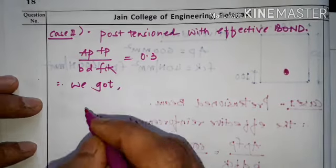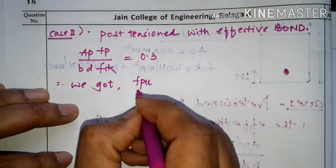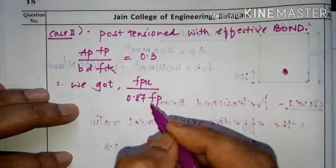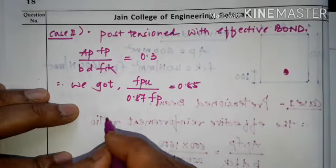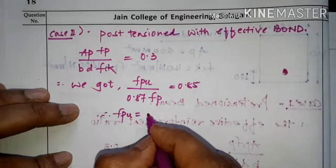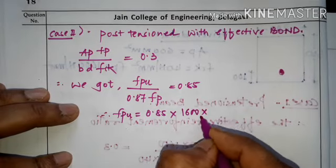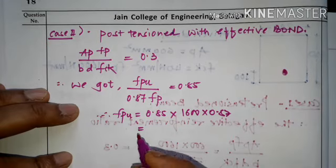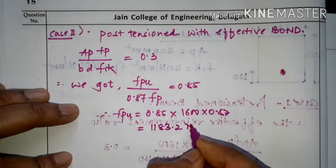Therefore FPU / 0.87FP = 0.85, so FPU = 0.85 × 0.87 × 1600 = 1183.2 N/mm².